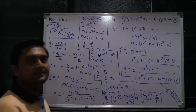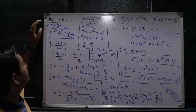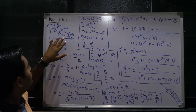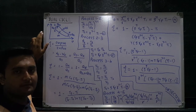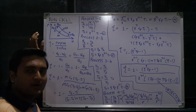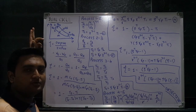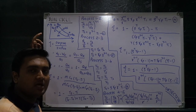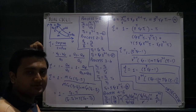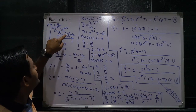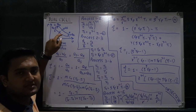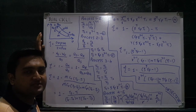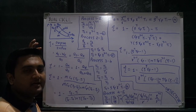Hello friends, my name is Jayvee and today we are going to discuss about dual cycle. In the PV diagram, the 1 to 2 process is isentropic compression, in which work is required by the system. The 2 to 3 process is constant volume heat addition, 3 to 4 is constant pressure heat addition, 4 to 5 is isentropic expansion, and 5 to 1 is constant volume heat rejection. During the expansion process 4 to 5, work is done by the system.